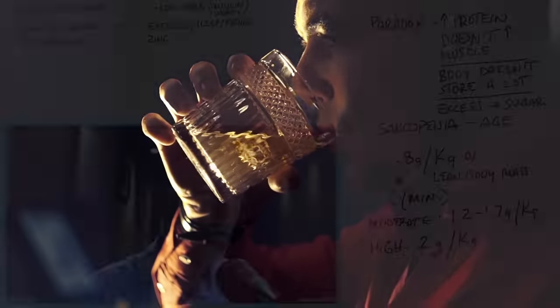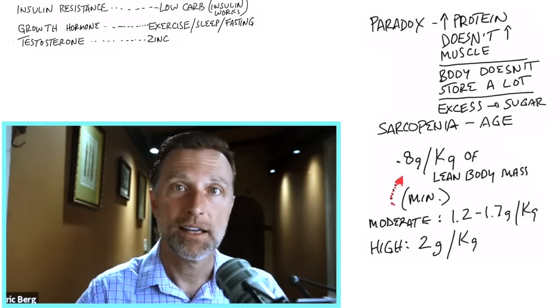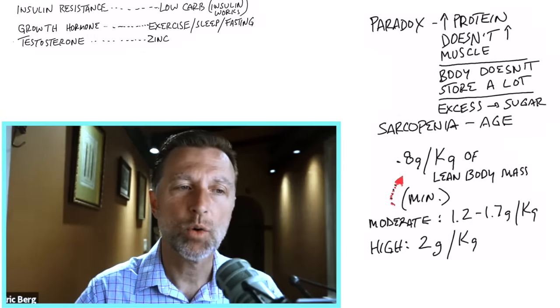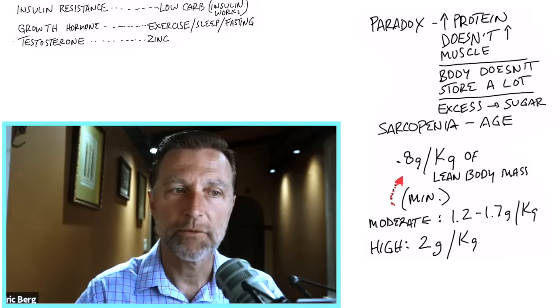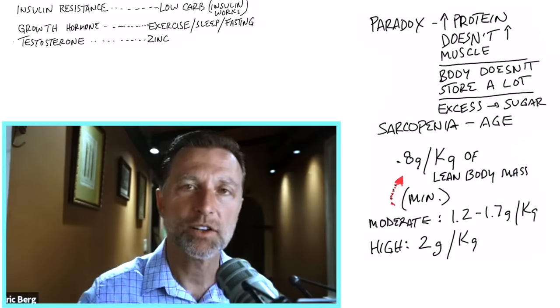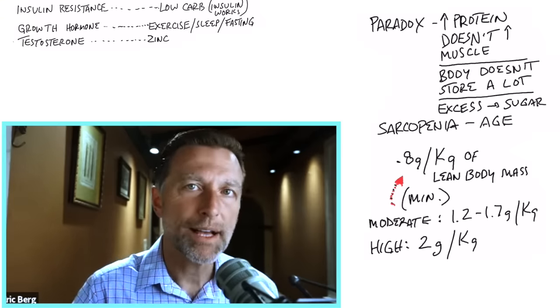Now, another way to create a problem with amino acids is to consume foods low in certain amino acids, like plant-based proteins. Whether you're a vegetarian or a vegan or consuming a lot of plant-based protein, which are considered clean proteins, many times are low in certain amino acids.